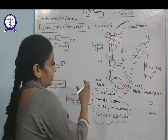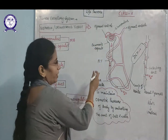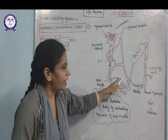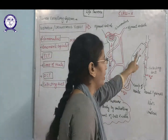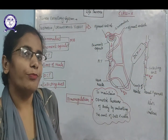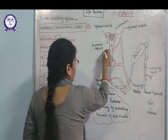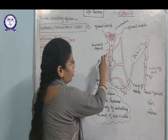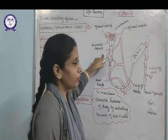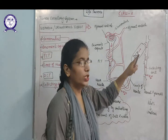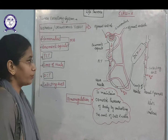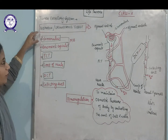The body maintains blood concentration because useful substances are reabsorbed from the nephrons. From the PCT, DCT, and other parts of the nephron, substances like glucose, vitamins, amino acids, and water are absorbed back by the body. Water is also absorbed from the DCT.